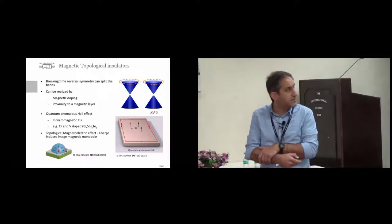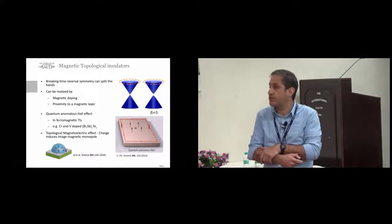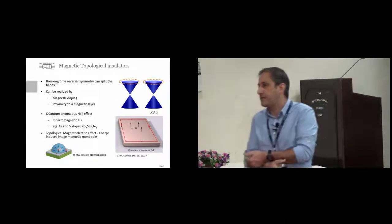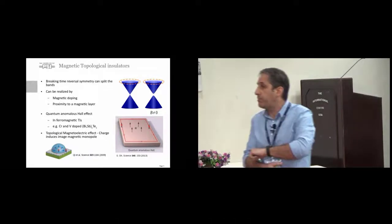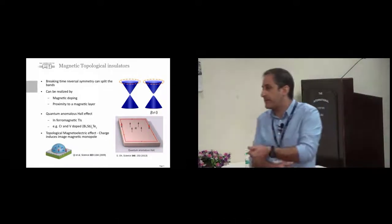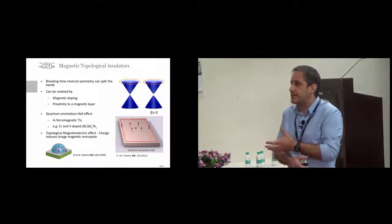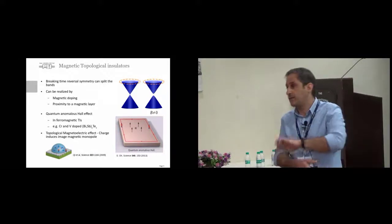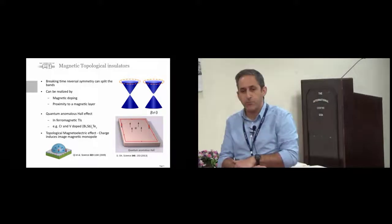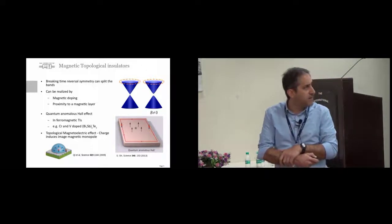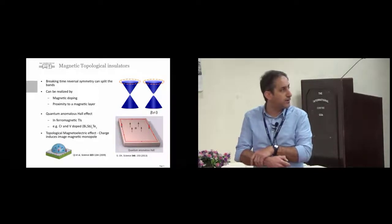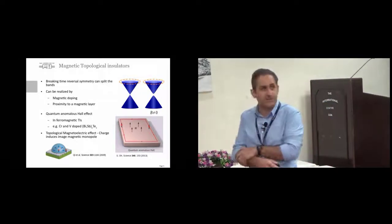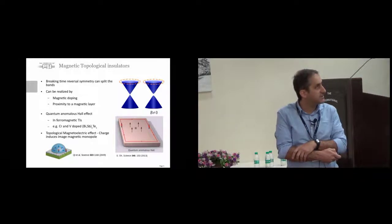Another phenomenon in such systems is the topological magnetoelectric effect: applying a magnetic field creates an electric field inside the sample, and applying an electric field creates a magnetic field. You can think about manipulating these systems by applying electric or magnetic fields and sensing the other field in memory applications. There are also theoretical predictions to create an image magnetic monopole — for details I have a poster if you're interested.